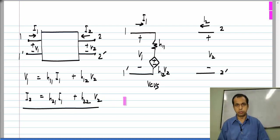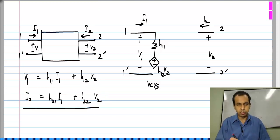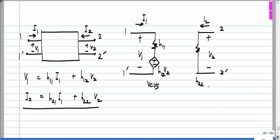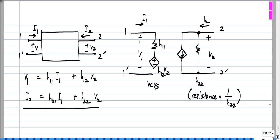For the second equation we need parallel branches because we need to add currents. The term H22·V2 — where current is proportional to voltage — is represented by a conductance of H22, or equivalently a resistance of 1/H22. Finally, the term H21·I1 is represented by a current-controlled current source, because I1 is a current and the resultant I2 is also a current. The gain of this current-controlled current source is H21.